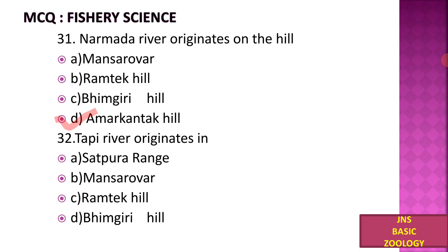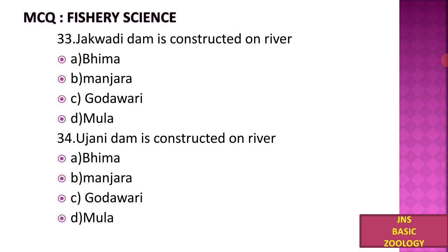Next, the Tapi river originates in the Satpura range. A) Manasarovar, B) Manasarovar, C) Ram Tech Hill, D) Brahmagiri Hill. The Tapi river originates in the Satpura range, a range of hills found across Gujarat, Maharashtra, and Madhya Pradesh states.